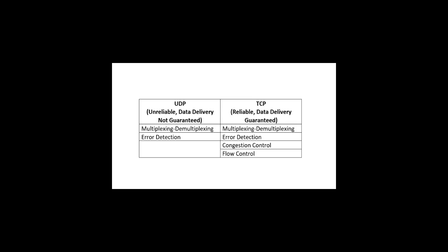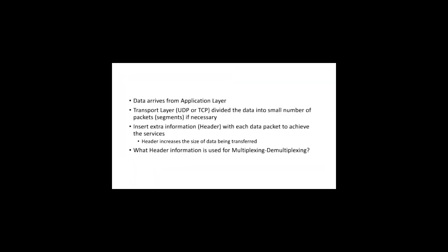TCP, on the other hand, guarantees that data will be delivered. It performs multiplexing/demultiplexing and error detection just like UDP, but additionally performs two functions: congestion control and flow control.